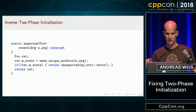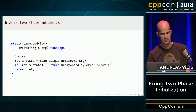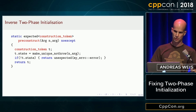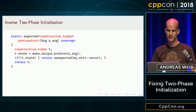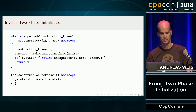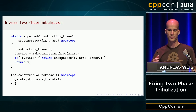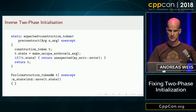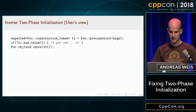So we came up with a way around this, which we call inverse two-phase initialization, because it switches the phases around. Instead of a static create function, we have a pre-construct member function which returns not the final class but what we call a construction token. This construction token is able to hold the same state as the final class, but otherwise it's the world's dumbest type — you cannot do anything with it except pass it to the actual constructor, which will consume it and move the state over into the final object. Since all the heavy lifting has already happened in the pre-construct phase, this second step can also be noexcept.